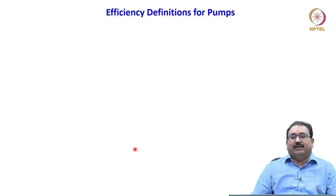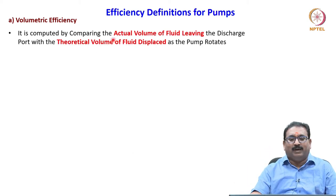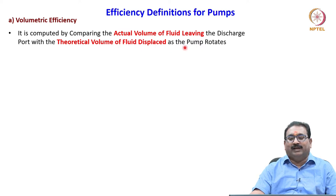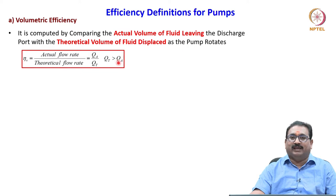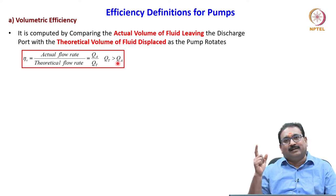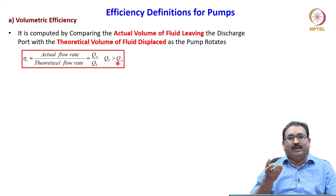Let us see the efficiencies of the pumps. The first one, as I told you, is volumetric efficiency, which accounts for leakage. It is computed by comparing the actual volume of fluid leaving the discharge port with the theoretical volume of fluid displaced as the pump rotates. Volumetric efficiency is the ratio of actual flow rate to theoretical flow rate — that is QA by QT. Always remember, the theoretical flow rate is greater than QA. Actual flow is always less because there is leakage between the rotating and the mating housing. If clearance increases, leakage is more and volumetric efficiency will be less.